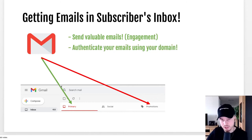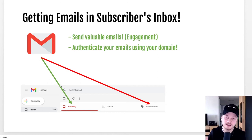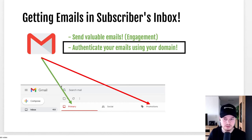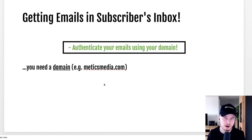Another thing we're going to do in our MailChimp account is authenticate our email address and email domain, because this will already build trust with email providers like Gmail and AOL, making it a bit easier to get your emails in the inbox and increasing your deliverability rate. To authenticate your emails using your domain, you're going to need a domain — something like medicsmedia.com. I assume you already have one, but if you don't, you can skip this part. I do recommend getting your own domain; it's around $10 and definitely worth the investment.